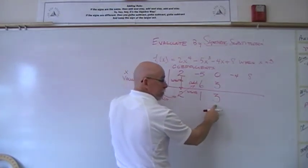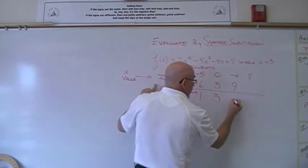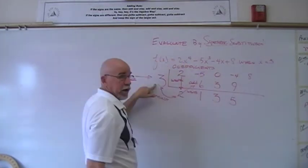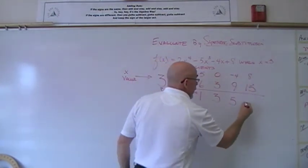Now what do we do with the 3 and the 3? We multiply it, write what we've got, then add using our adding rule. We've got 15, we multiply, we write, we add.